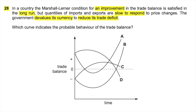This question is from Winter 2010 Paper 1 Question 28. In a country, the Marshall-Lerner condition for an improvement in the trade balance is satisfied in the long run, but quantities of imports and exports are slow to respond to price changes. The government devalues its currency to reduce its trade deficit — which curve indicates the probable behaviour of the trade balance? There's a lot of information in this question. First, the country seeks an improvement in its trade balance. Second, the government devalues its currency. Third, it is seeking to reduce its deficit. Fourth, quantities of exports and imports are slow to respond. It's clear we are looking at a J-curve. We should start off this problem in a trade deficit position, which means having a negative trade balance — that leaves us with only B and C. However, B shows that the long-run impact of a devaluation will lead to a trade surplus, whereas C shows an initial trade deficit with immediate movement towards a surplus, indicating imports and exports are immediately responsive to changes in price. Therefore, our correct answer is B.